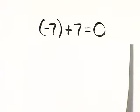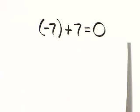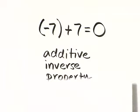Let's name the property illustrated by this statement. Negative 7 plus 7 is equal to 0. Remember, negative 7 and 7 are opposites or additive inverses of each other. So this is the additive inverse property.